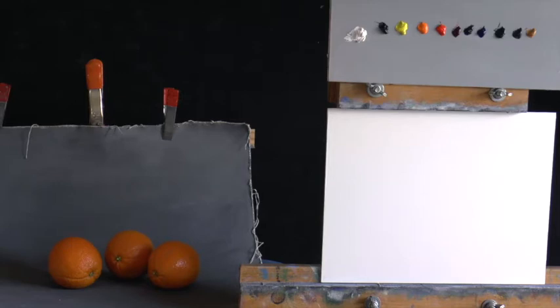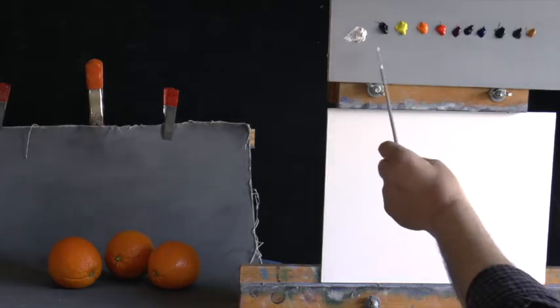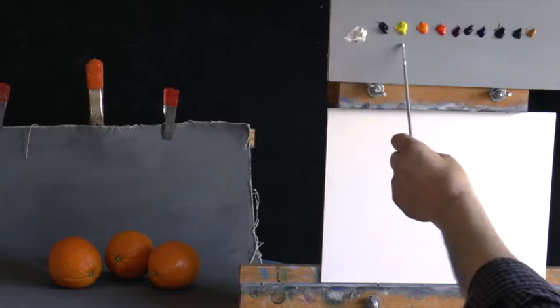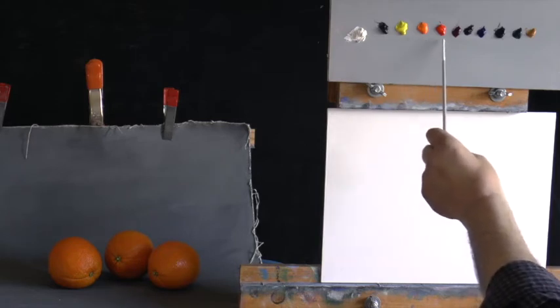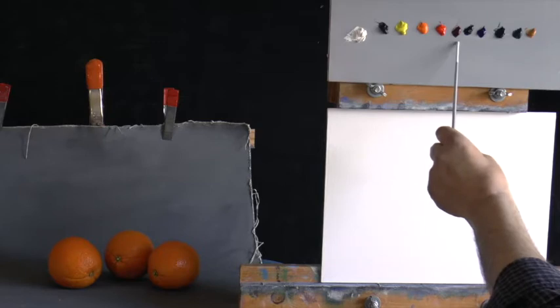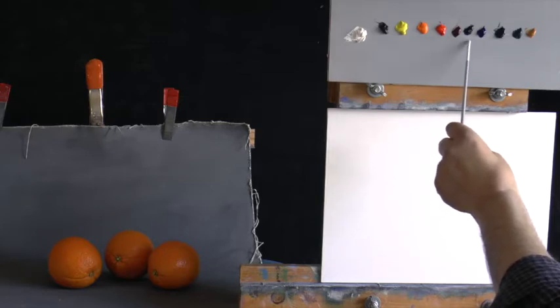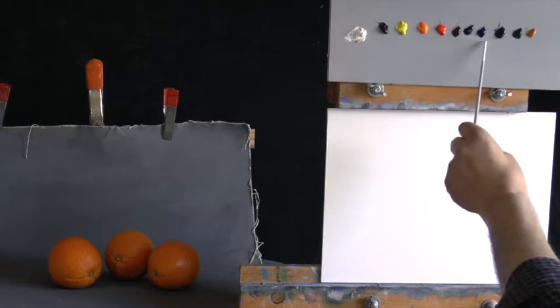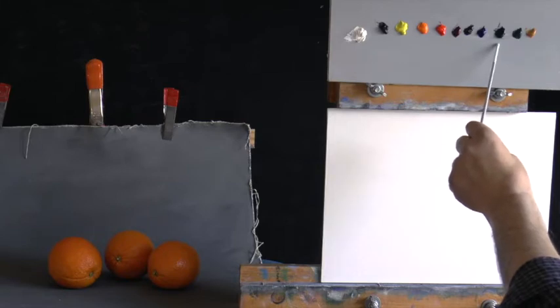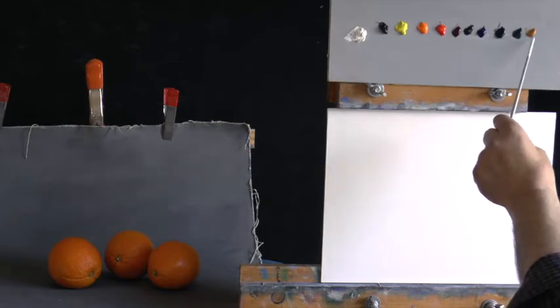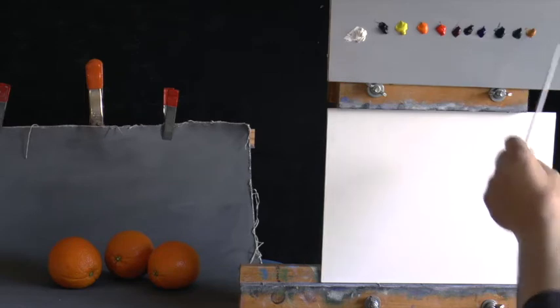Before I begin, I just want to go over the colors that I put out on my palette. I have white, black, that's yellow, orange, red, magenta, purple, ultramarine blue, that's phthalo turquoise, phthalo green, and yellow ochre.